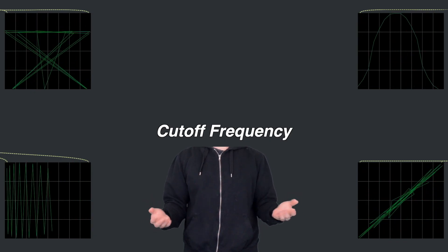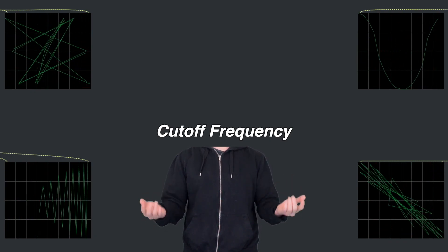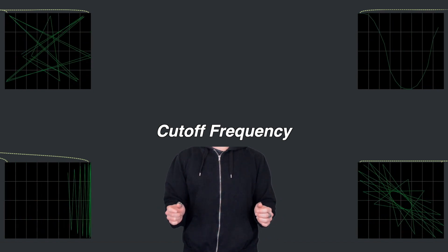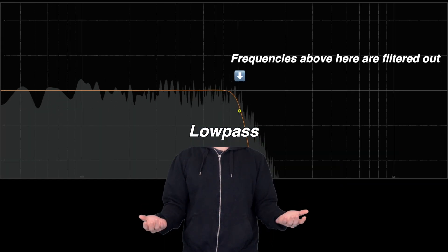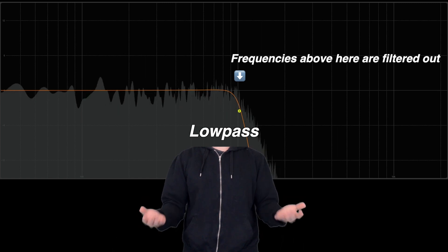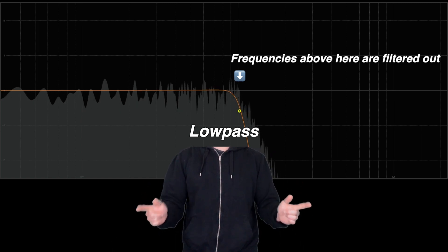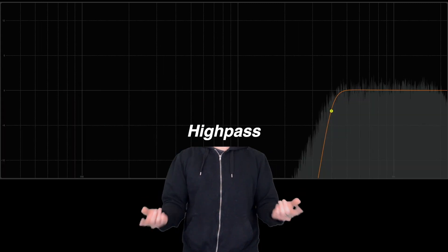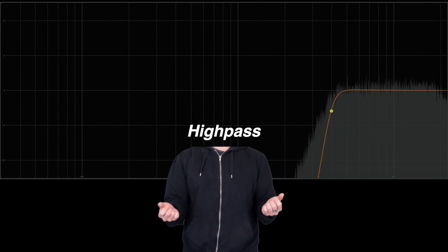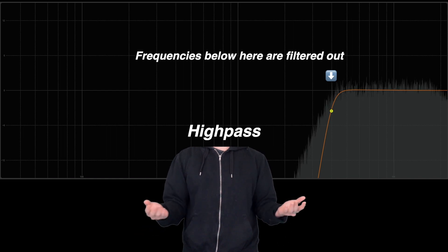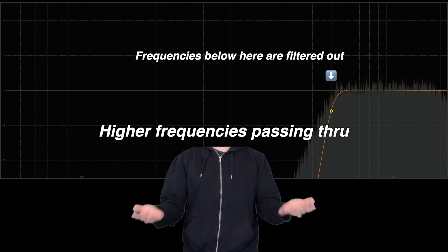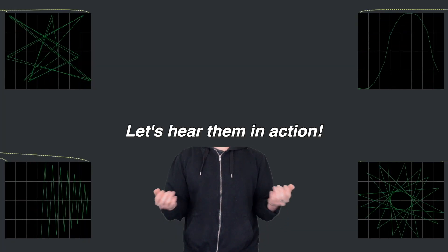The way we use a filter is by changing a parameter called cutoff frequency, which determines what frequencies are filtered out. In the case of low-pass, any frequencies above the cutoff frequency will be filtered out. Hence, the lower frequencies are passing through. So how do you think high-pass filter works? The frequency contents below the cutoff frequencies will be filtered out. Hence, higher frequencies passing through. Okay, let's hear it in action.